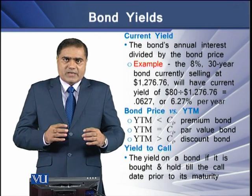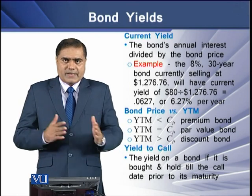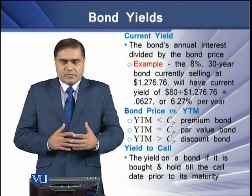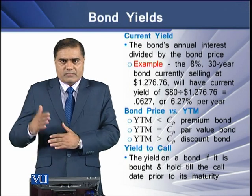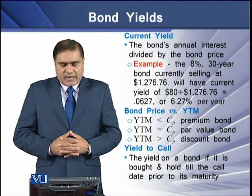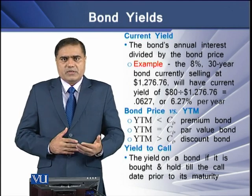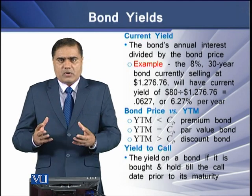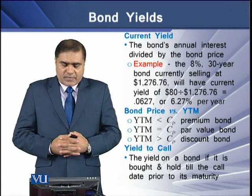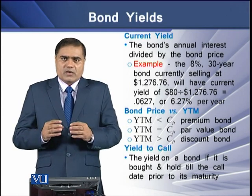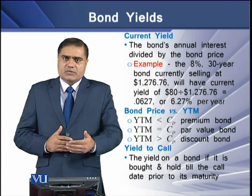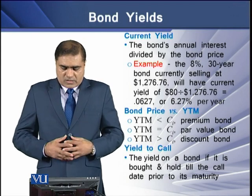What is the relationship between bond prices and YTM? If the YTM is less than the coupon interest rate, the bond is selling at a premium above par value and is termed a premium bond. If YTM equals the coupon interest rate, it is a par bond. If YTM is greater than the coupon interest rate, the bond is selling at a discount and is termed a discount bond.